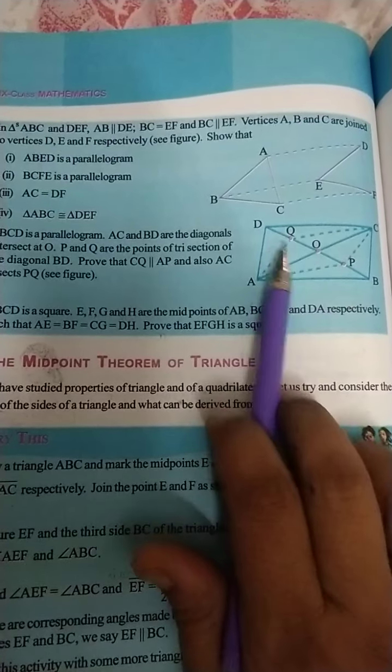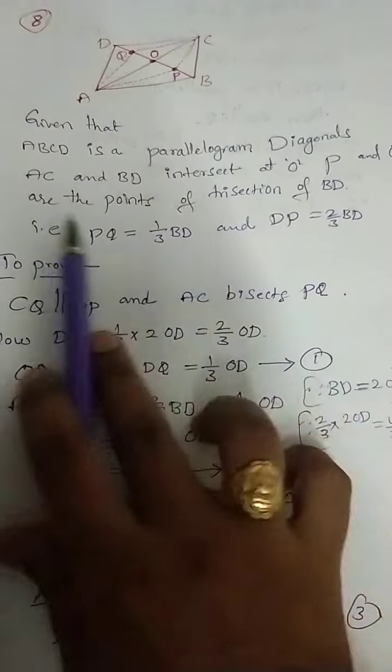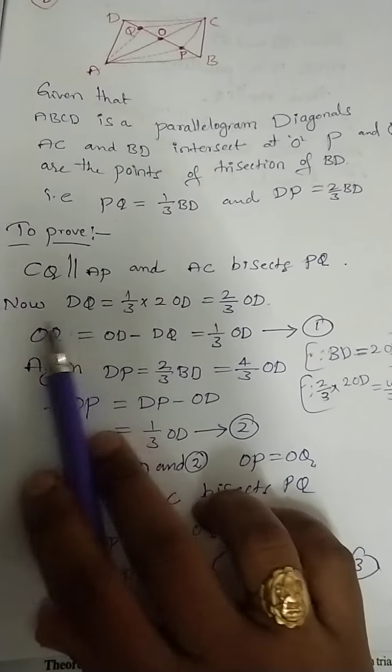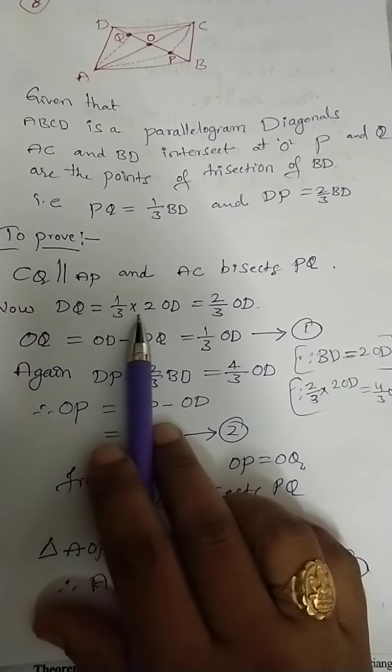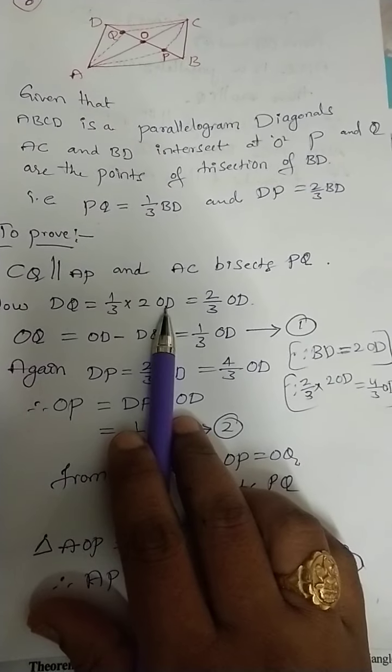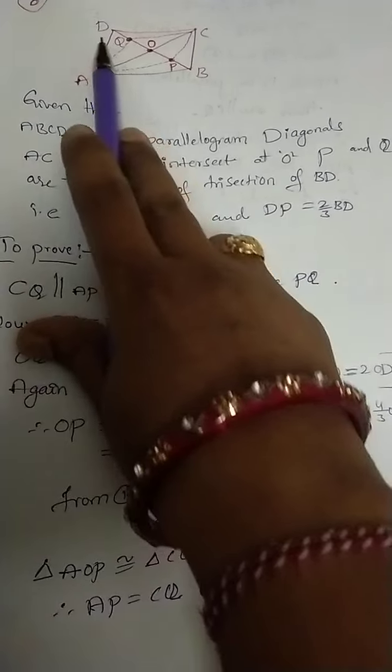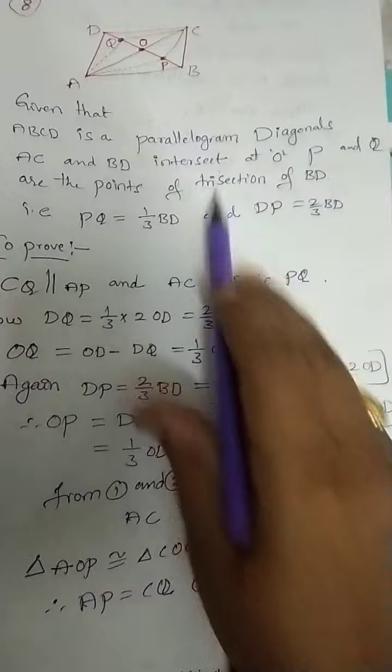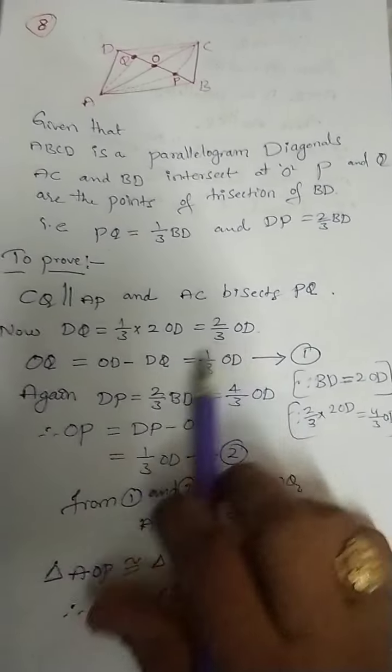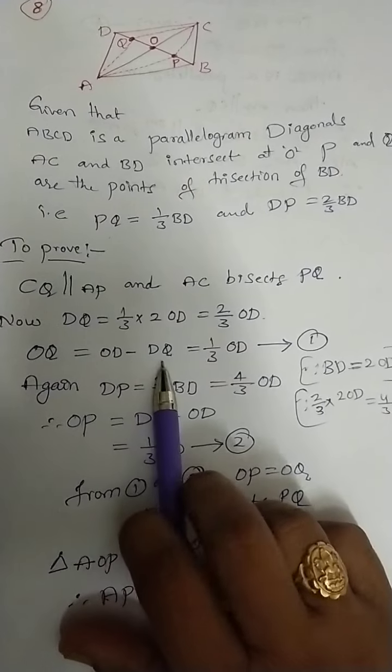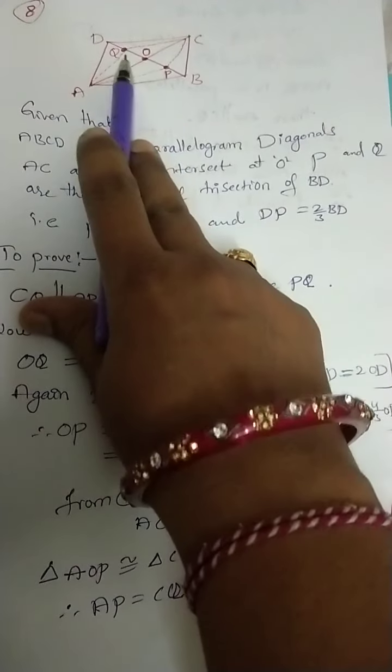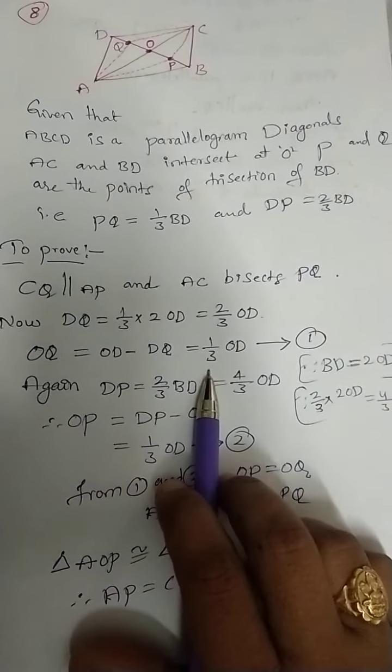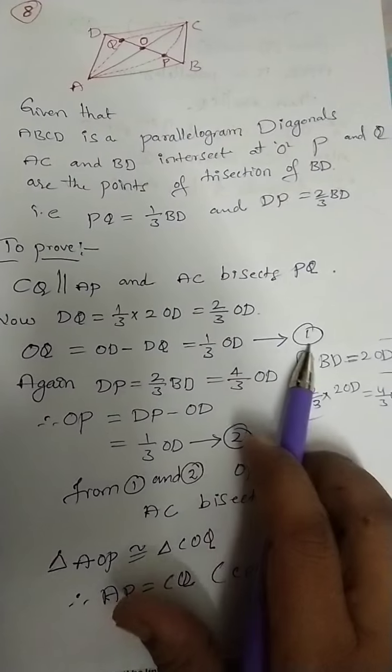Here is what's given in the question. Now, DQ is 1/3 into 2 into OD, which is 2/3 OD. Now, OQ equals OD minus DQ. So that is 1/3 OD. Let us say equation 1.